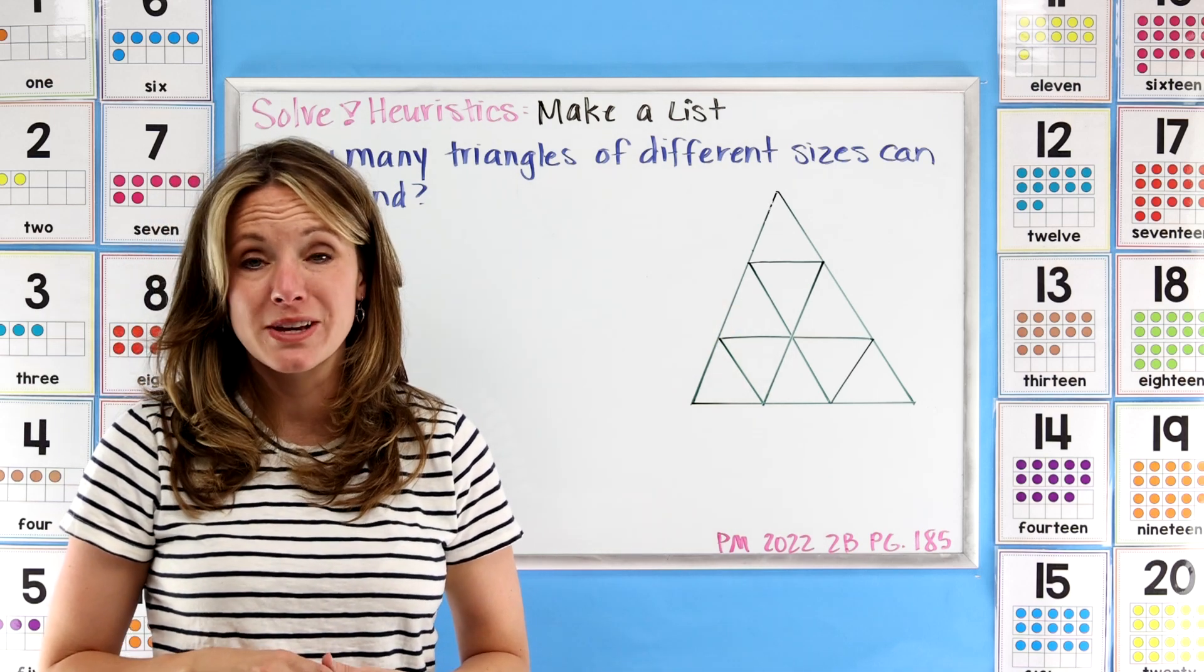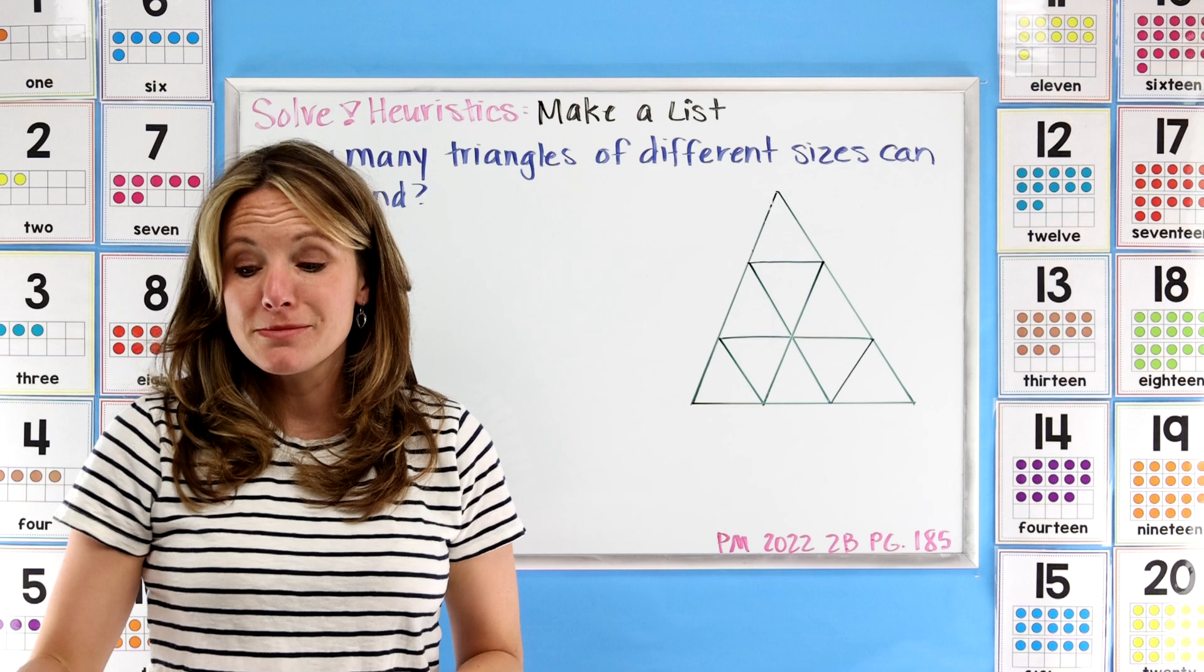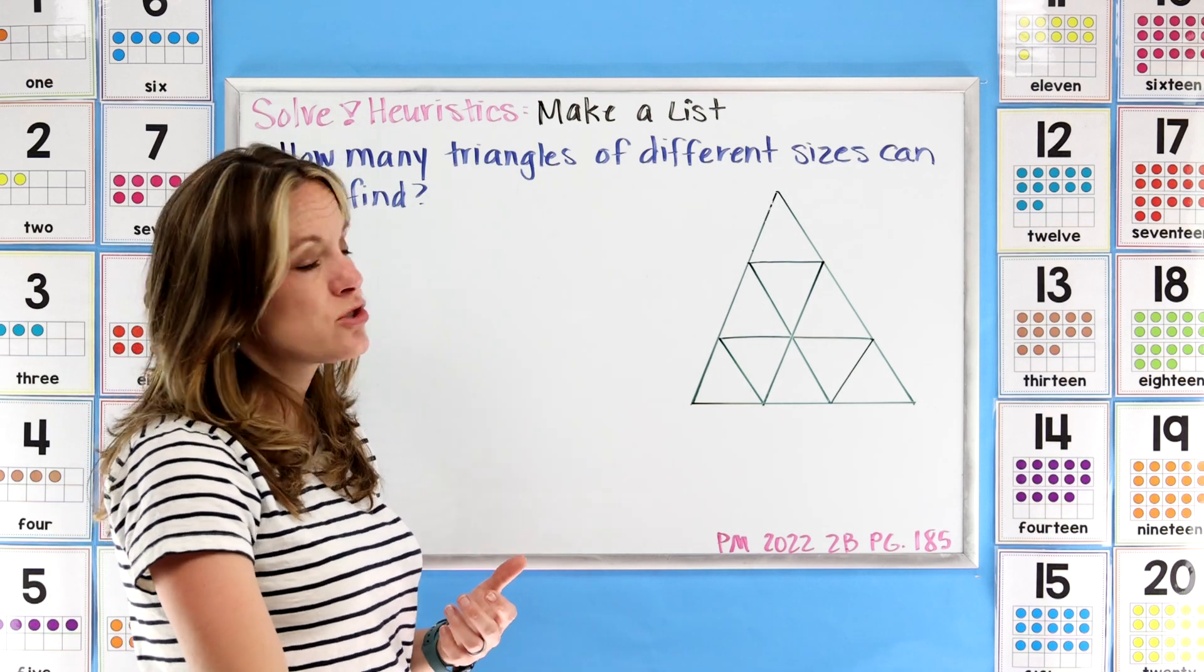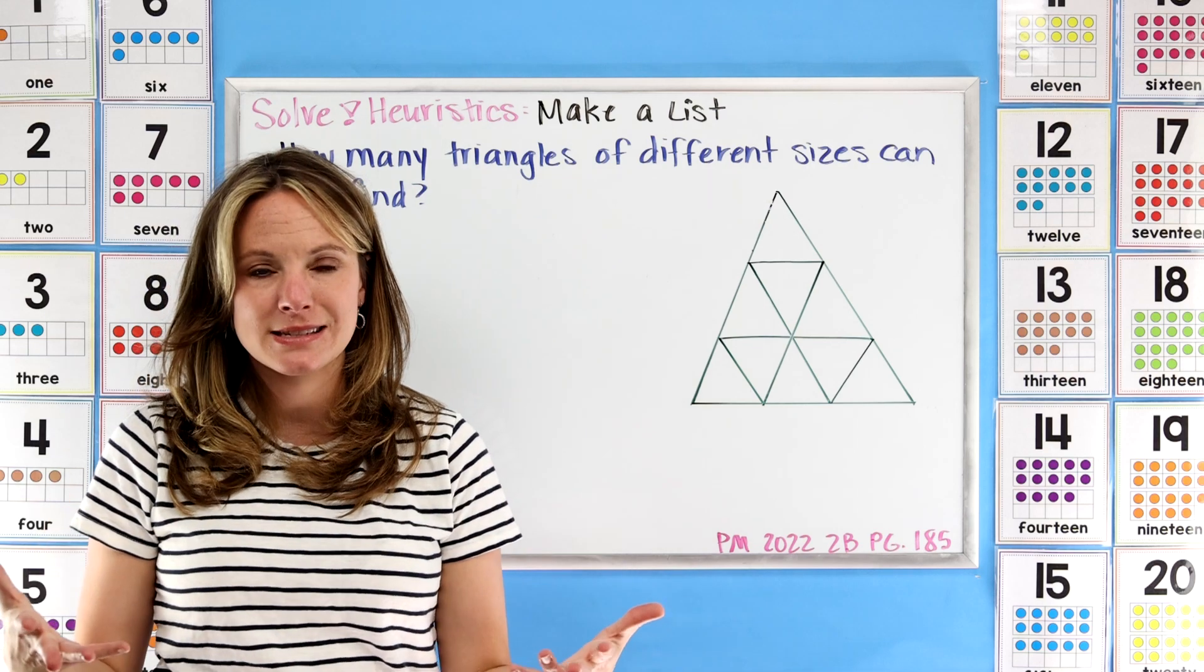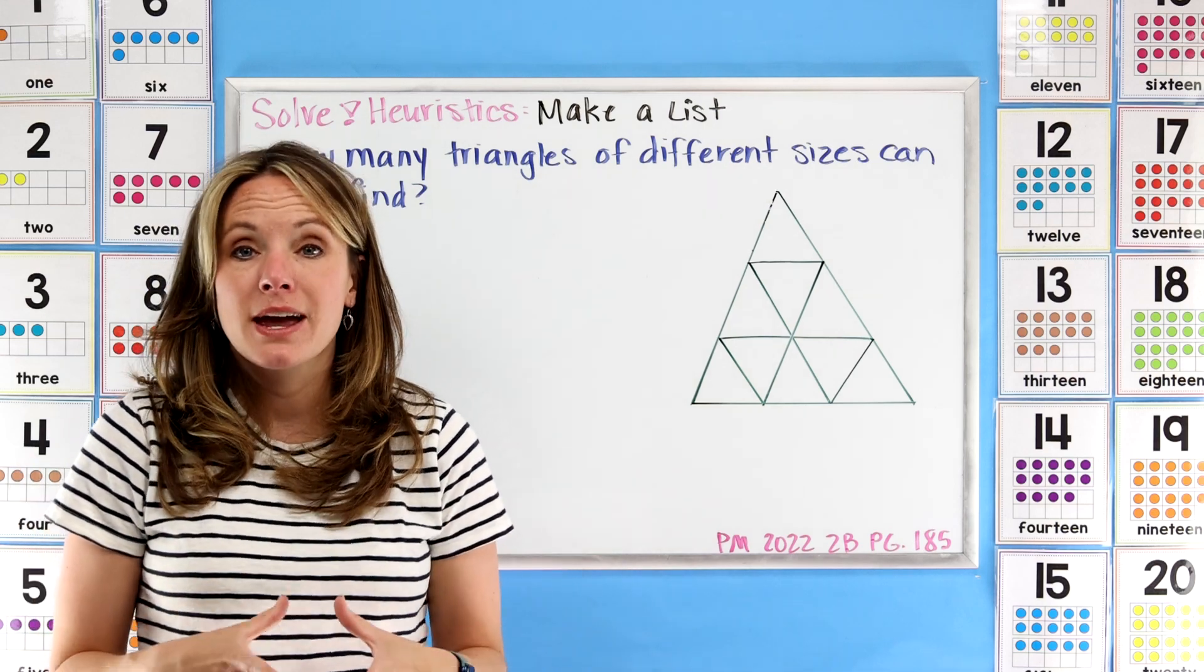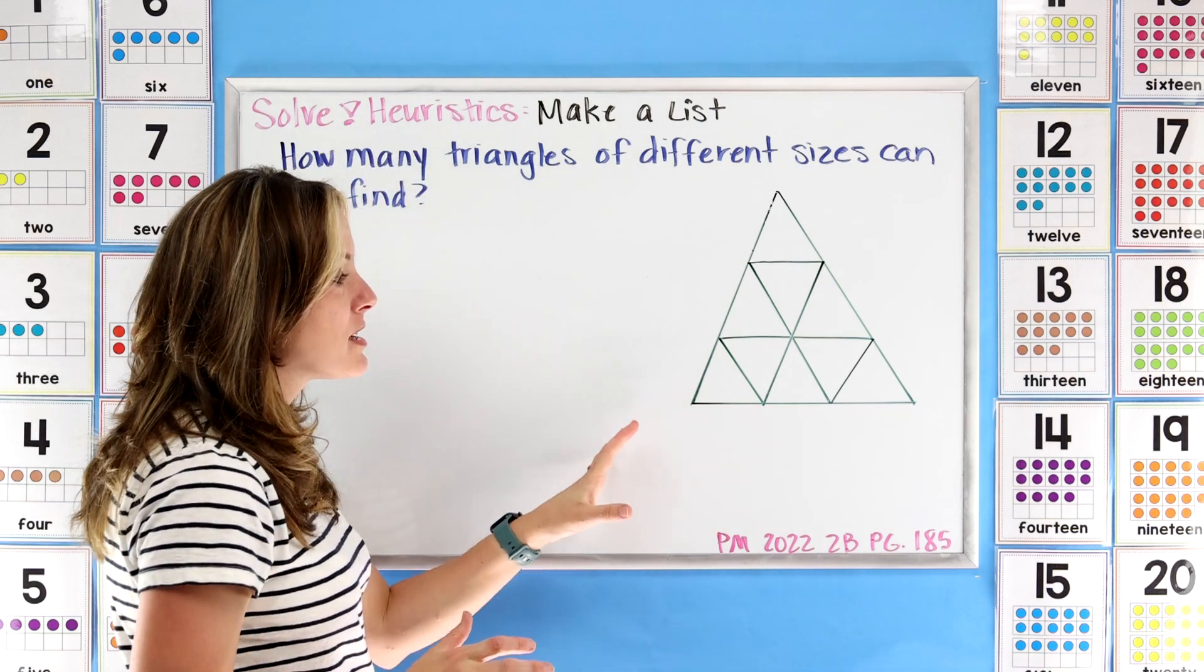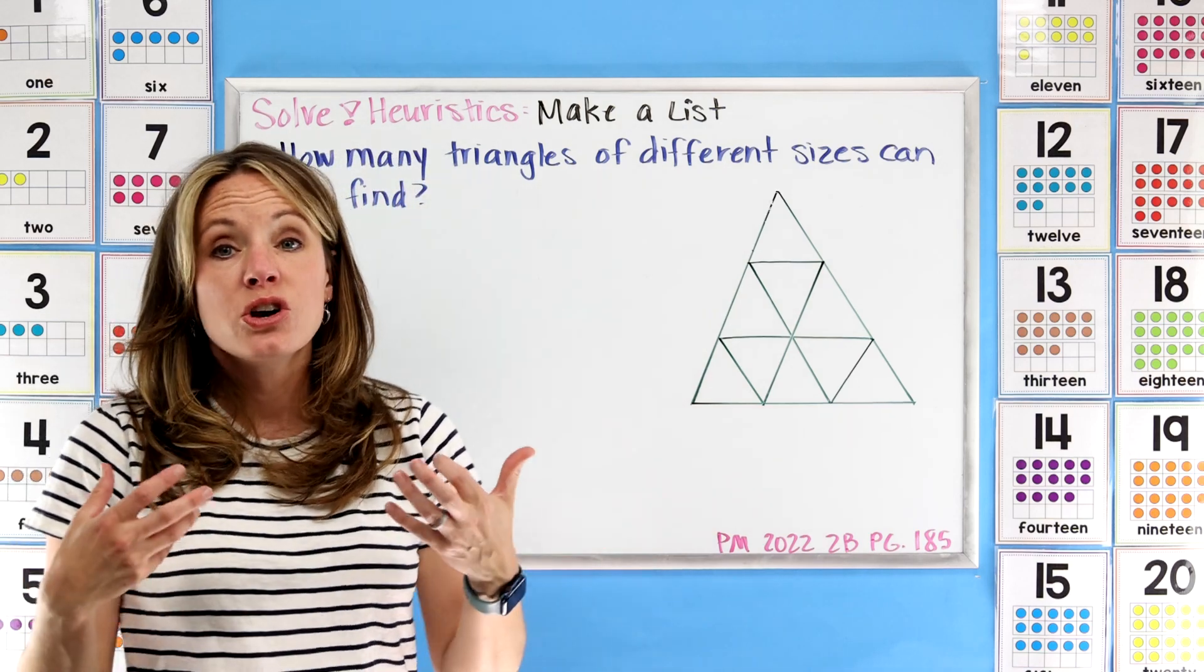Now we're going to make a plan, and our plan is to make a list. So what do I mean by making a list? Well, when we're comparing how we want to find the different types of triangles, we have to think about how we want to organize.